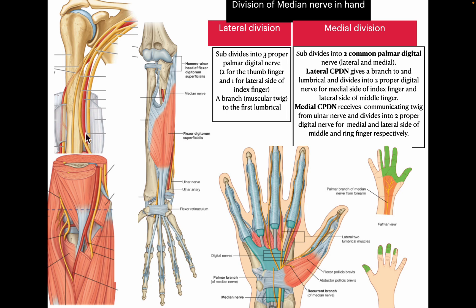In the diagram, the median nerve is seen crossing the brachial artery and coming toward the medial aspect of the arm. In the cubital fossa it is the most medial content. After crossing the cubital fossa it passes through the two heads of pronator teres, then deep to flexor digitorum superficialis. Near the wrist, before crossing the flexor retinaculum, the median nerve is lateral to the tendons of flexor digitorum superficialis. After passing through the carpal tunnel, it gives a lateral division and a middle division. The lateral division subdivides into three proper palmar digital nerves — two for the thumb and one for the lateral side of the index finger — and gives a muscular branch to the first lumbrical.